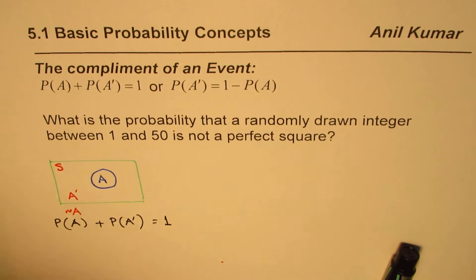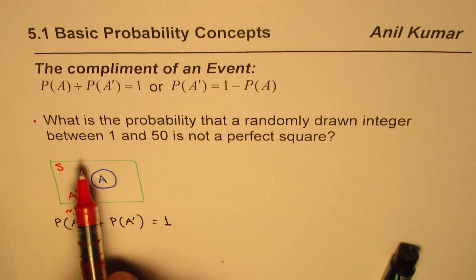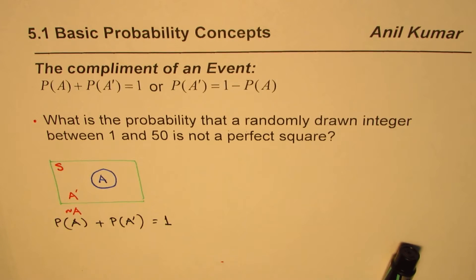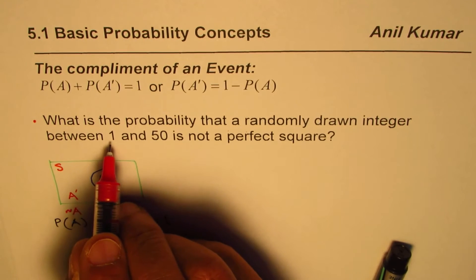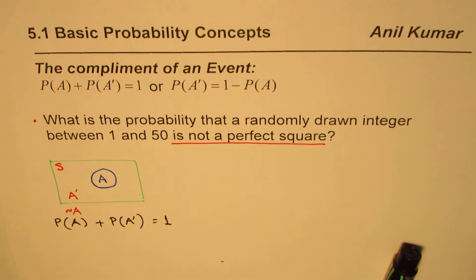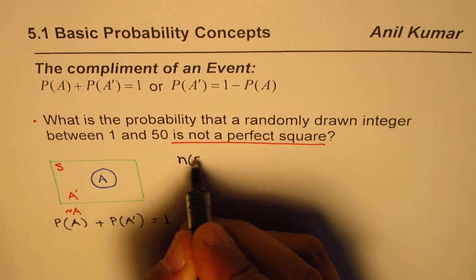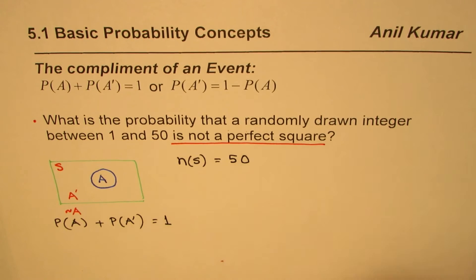Here is an example: what is the probability that a randomly drawn integer between 1 and 50 is not a perfect square? We want to draw an integer between 1 and 50 that is not a perfect square. There are 50 numbers, so the total number of possible outcomes is 50.